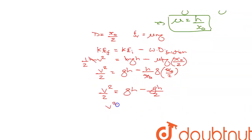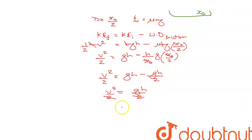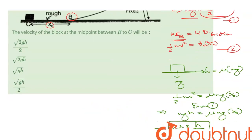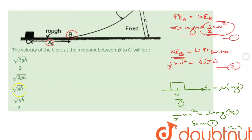So v squared by 2 is equal to gh by 2. 2 and 2 get cancelled, so v is equal to root gh. The correct answer is root gh—root gh is the velocity of the block at the midpoint.